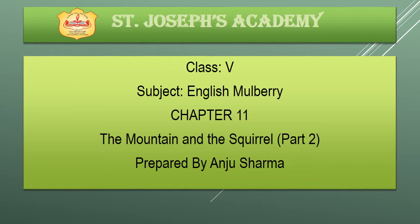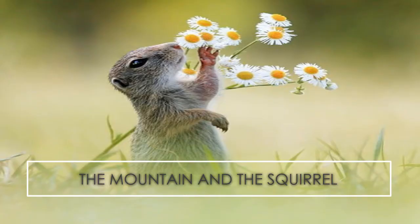The name of the poem is The Mountain and the Squirrel, and this video is The Mountain and the Squirrel Part 2. In our previous video class, we have studied about the poem, its author, word meanings, and we have recited the poem. Today I will explain the poem line-wise. So let us enjoy the poem.